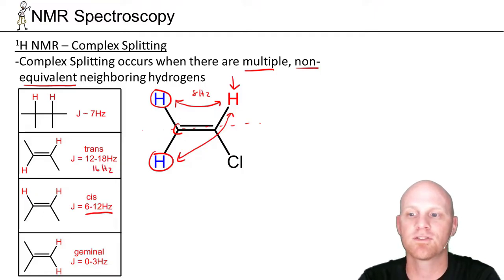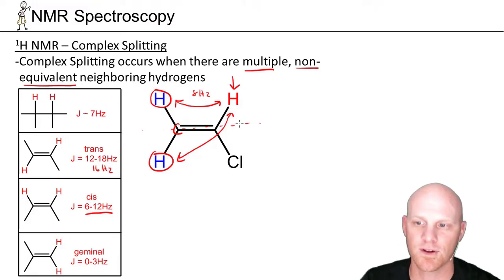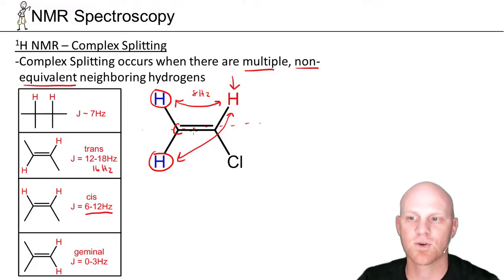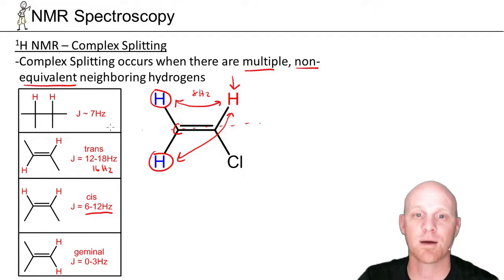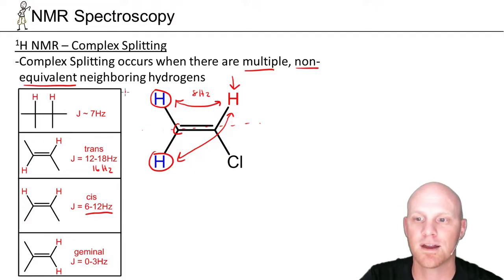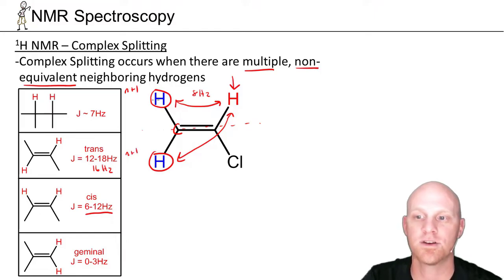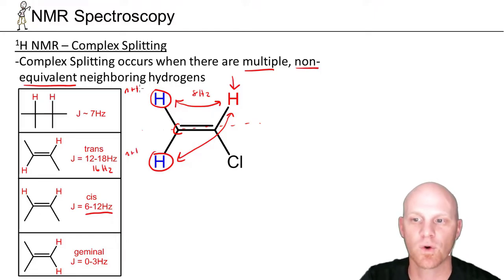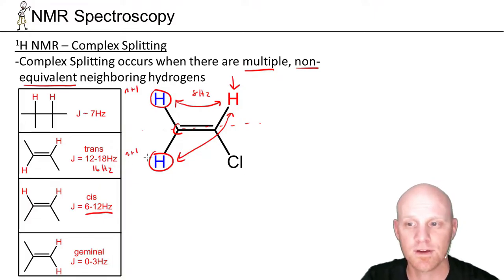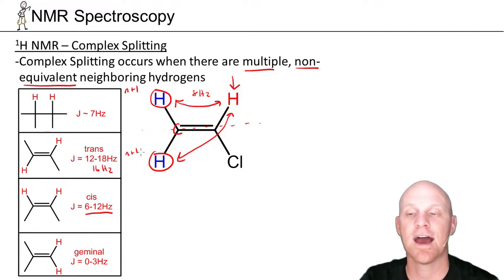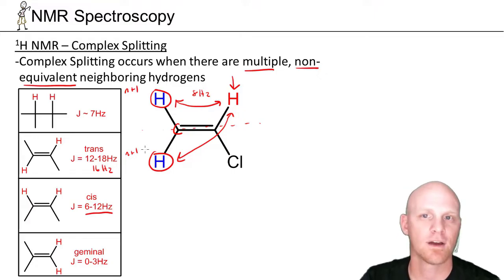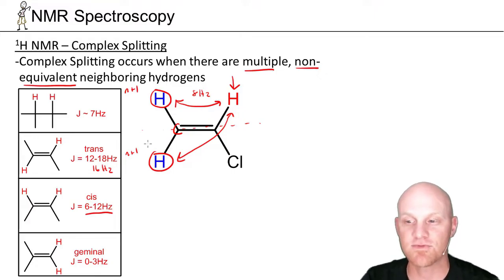We want to construct what's called a splitting tree to figure out what this signal would look like. Essentially, you're going to look at each of these neighboring hydrogens separately and apply an N+1 rule to each. For one hydrogen neighbor, N+1 gives two peaks. For the other one hydrogen neighbor, N+1 also gives two peaks. You multiply those together: two peaks times two peaks equals four peaks — and we get what's called a doublet of doublets, which implies four peaks.